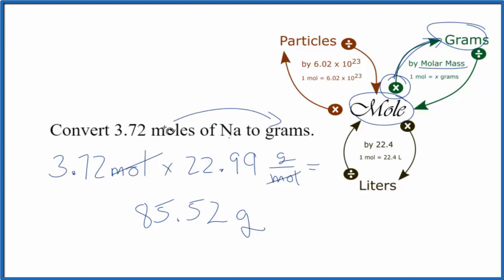So to recap, to convert from moles of sodium to grams, we multiply by the molar mass, or in this case because it's just one atom, the atomic mass. Moles cancel out. That leaves us with grams.